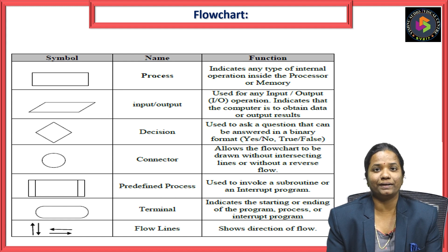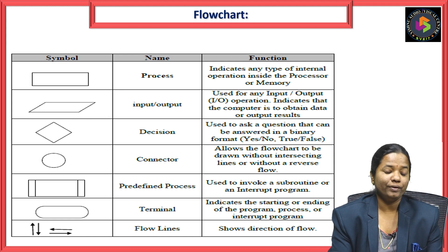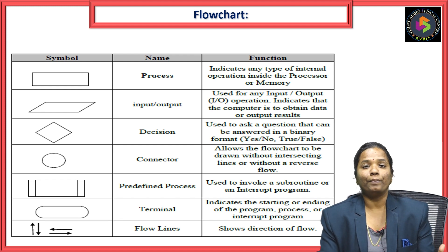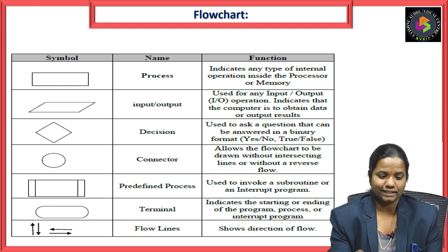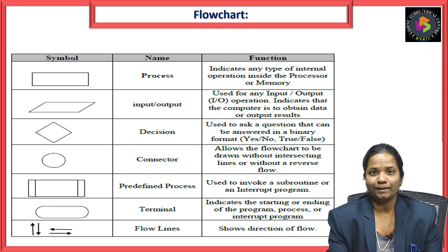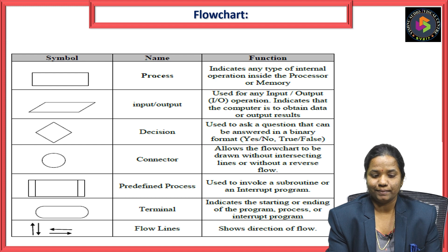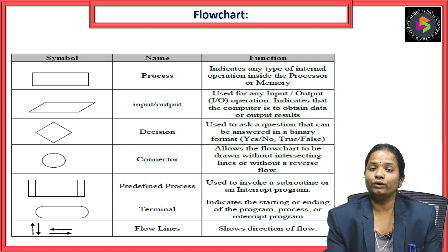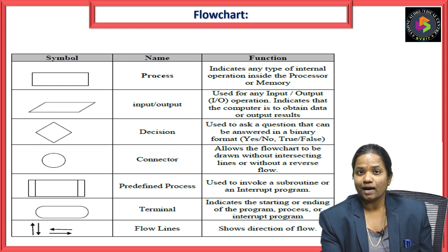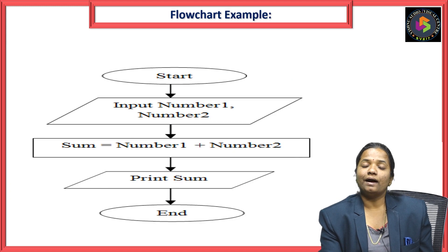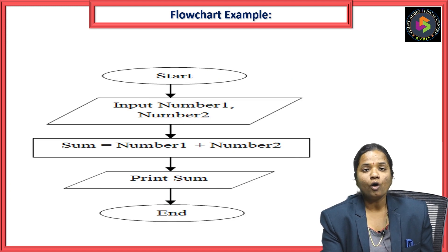Arrow symbols act as flow lines, specifying the direction between two representatives. To summarize: parallelogram is used for input or output, rectangle for process, diamond or rhombus for decisions, circle to connect symbols, and arrows to give the direction of flow from one symbol to another. These are the symbols mainly used to represent flowcharts clearly.